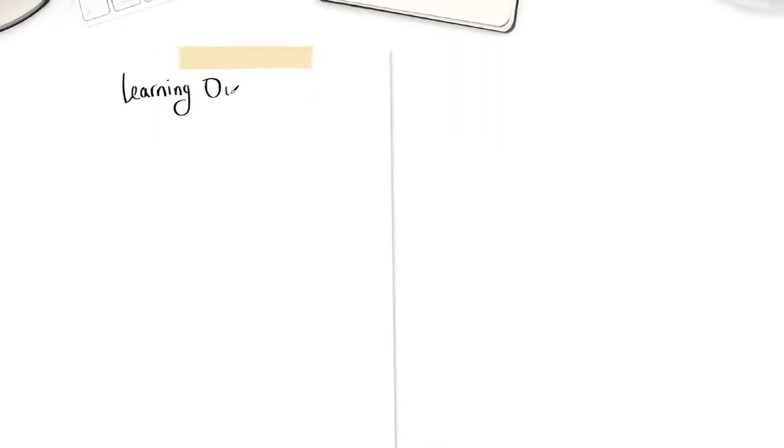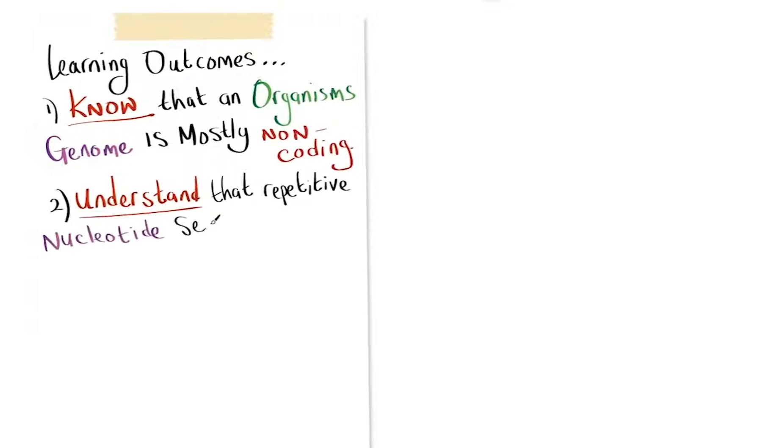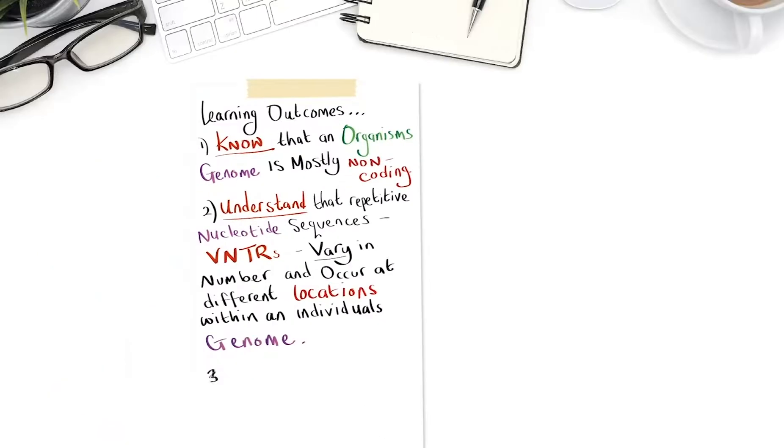Your learning outcomes this lesson are: one, know that an organism's genome is mostly non-coding. Two, understand that repetitive nucleotide sequences, VNTRs, vary in number and occur at different locations within an individual's genome. And three, evaluate the applications of VNTRs.